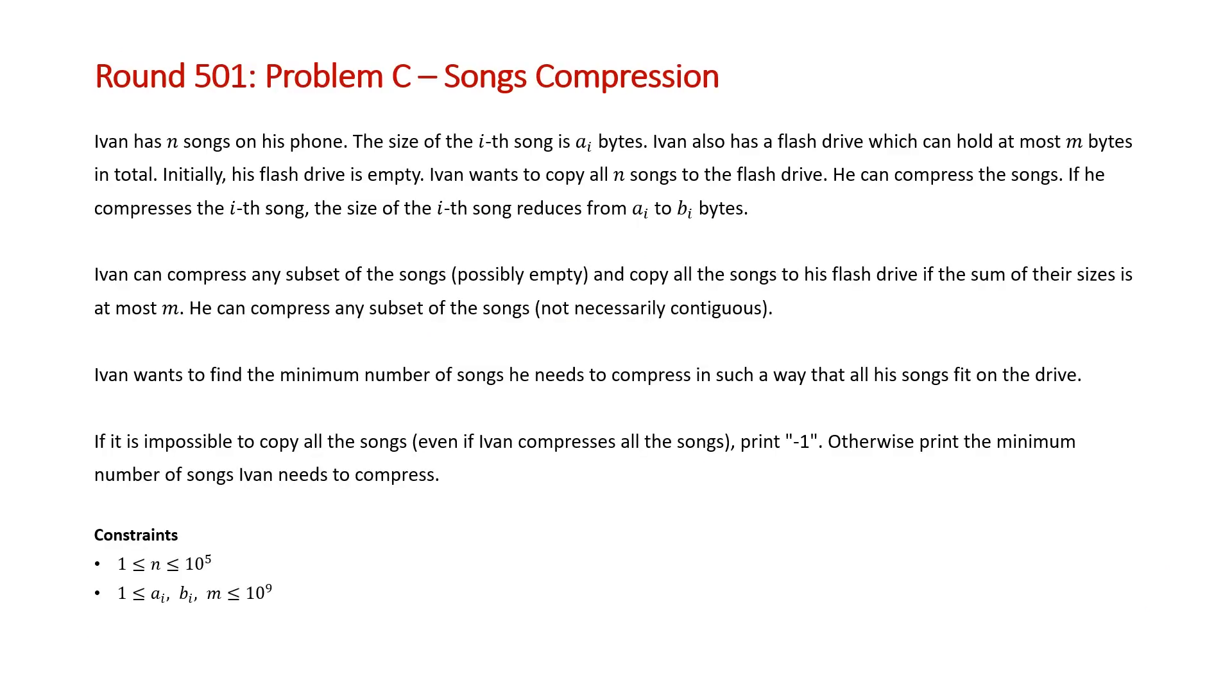The problem states Ivan has N songs on his phone. The size of the Ith song is AI bytes. Ivan also has a flash drive which can hold at most M bytes in total. Initially his flash drive is empty. Ivan wants to copy all N songs to the flash drive. He can compress the songs. If he compresses the Ith song, the size of the Ith song reduces from AI bytes to BI bytes.